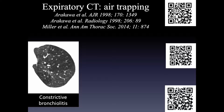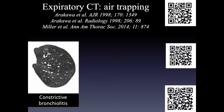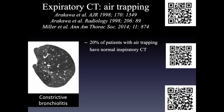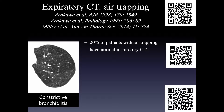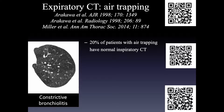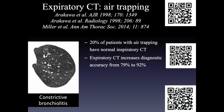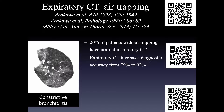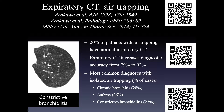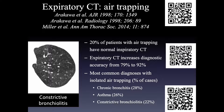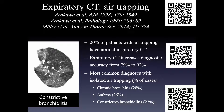When mosaic perfusion is from airways disease, we'd expect to see air trapping on expiratory CT in the same areas that were lucent on the inspiratory CT. About 20% of patients with air trapping will have a normal inspiratory CT, so expiratory CT can significantly increase your diagnostic yield. Diagnostic accuracy increases from about 80 to 90% when using expiratory CT, and the most common diagnoses showing isolated air trapping include chronic bronchitis, asthma, and constrictive bronchiolitis.